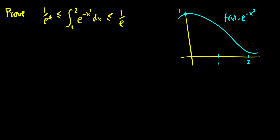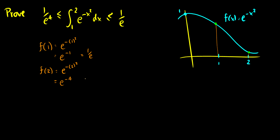Let's do an example. For the function e^(−x²) between one and two, I'm claiming the integral from 1 to 2 of e^(−x²) is going to be greater than 1/e⁴ but less than 1/e. Looking at the graph, f(1) is going to be a maximum and f(2) is going to be a minimum. We calculate: f(1) = e^(−1²) = e^(−1) = 1/e, and f(2) = e^(−2²) = e^(−4) = 1/e⁴. So these are the upper and lower bounds.